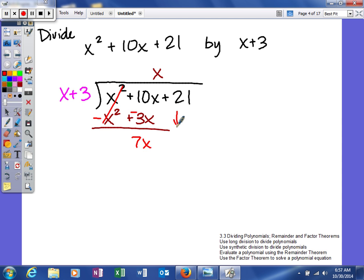Just like the other time, on the last example with numbers, I'm going to bring that down and figure out what do I have to multiply x by to give me the first term here, 7x. And that answer is a positive 7. So when I multiply 7 times x, I get 7x. When I multiply 7 times 3, I get 21.